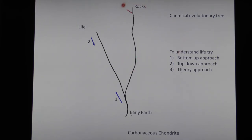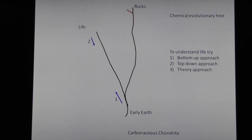This little red thing right here represents an attempt by people to give birth to something new. We're not going to talk about that, but some people are trying to make another line — it's usually called artificial intelligence. It's a new thing; it's not going to have the same chemistry as life, but the theory part is similar.